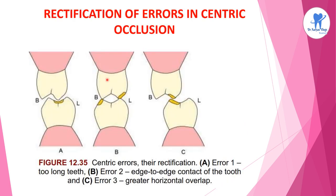These are the rectification of errors in centric occlusion. The centric errors and their rectification include: Error 1 — two long teeth; Error 2 — edge to edge contact of the tooth; and Error 3 — greater horizontal overlap.